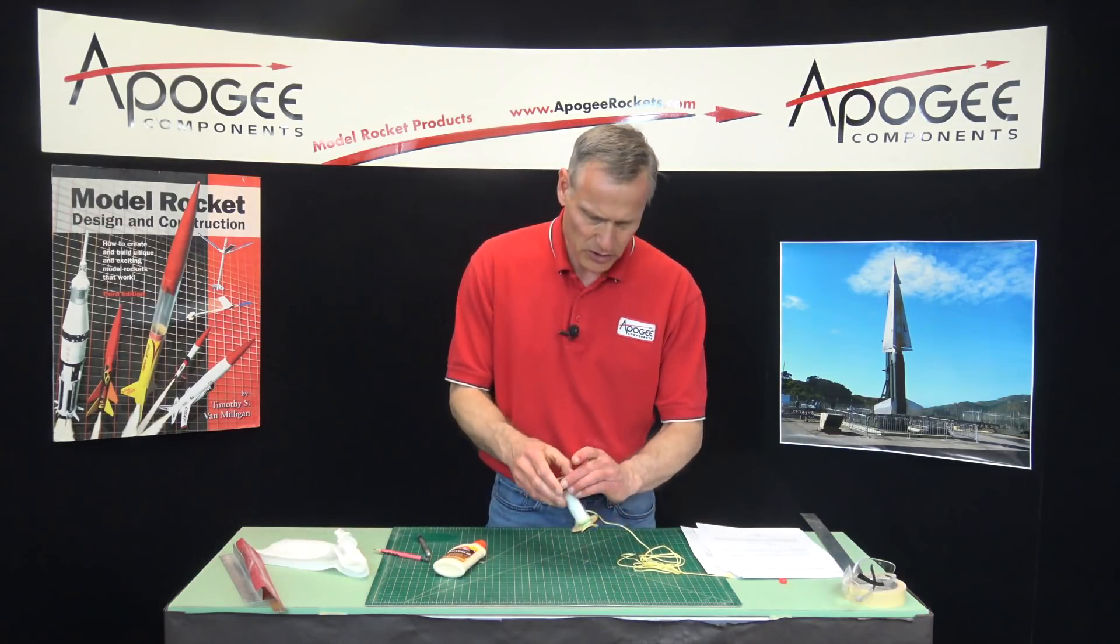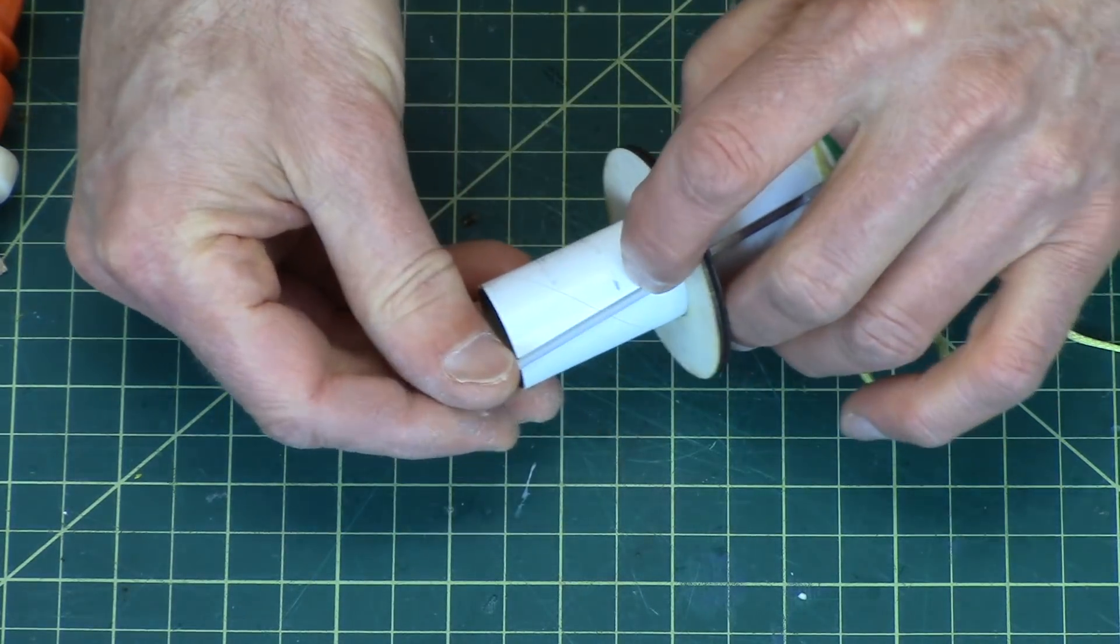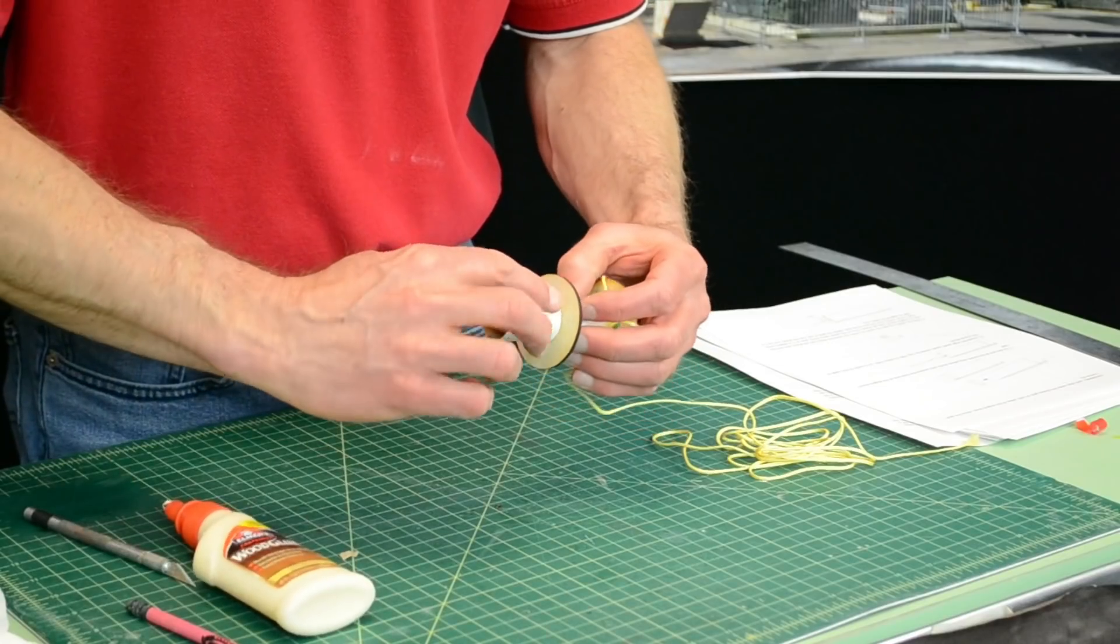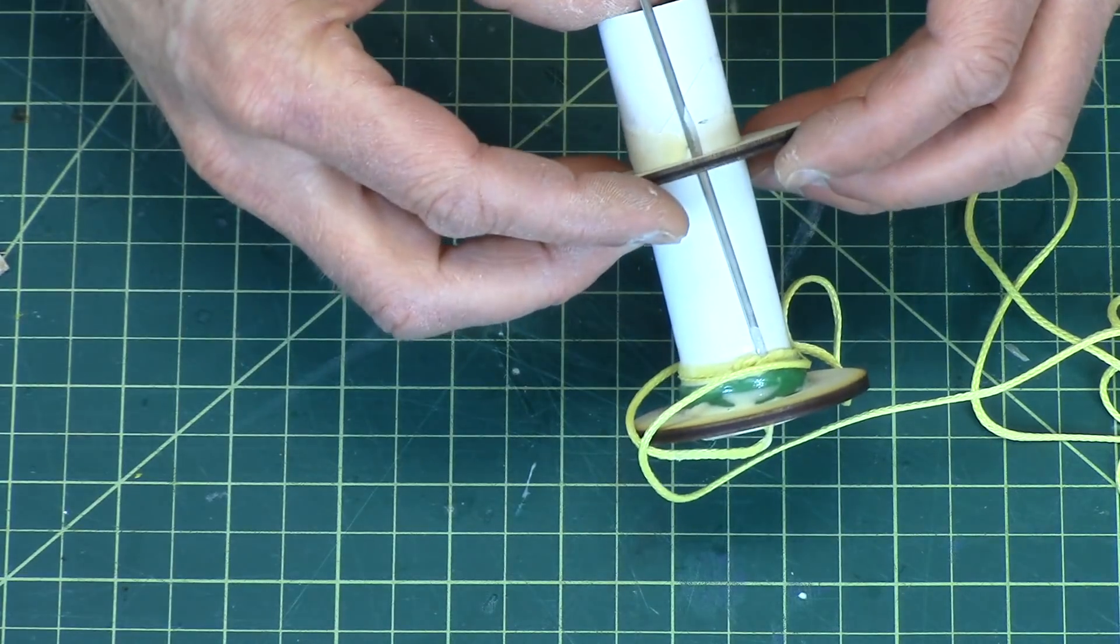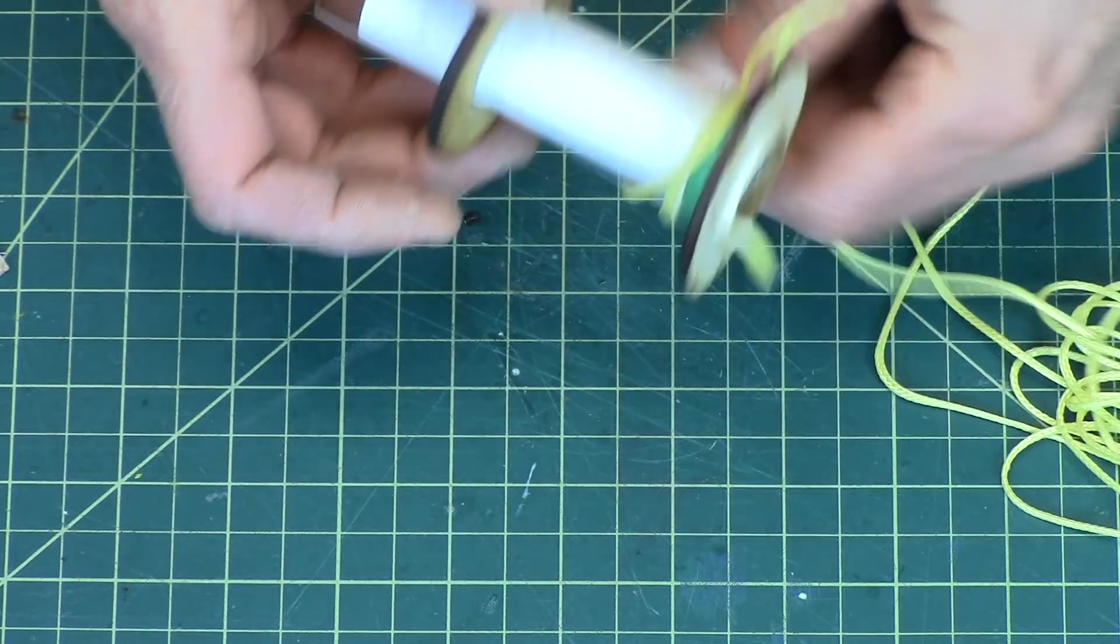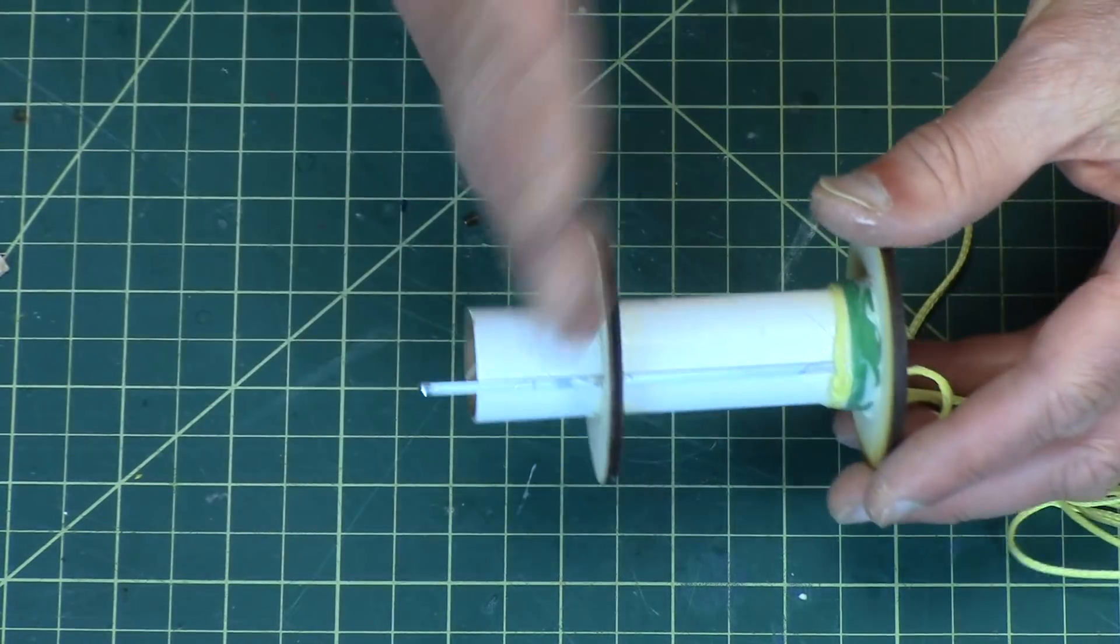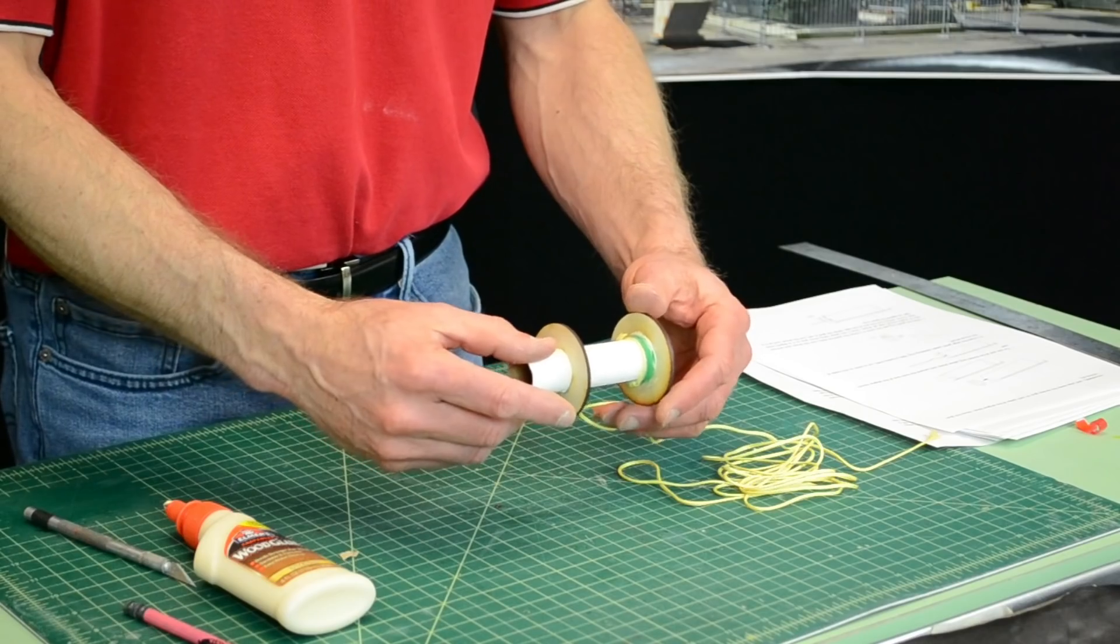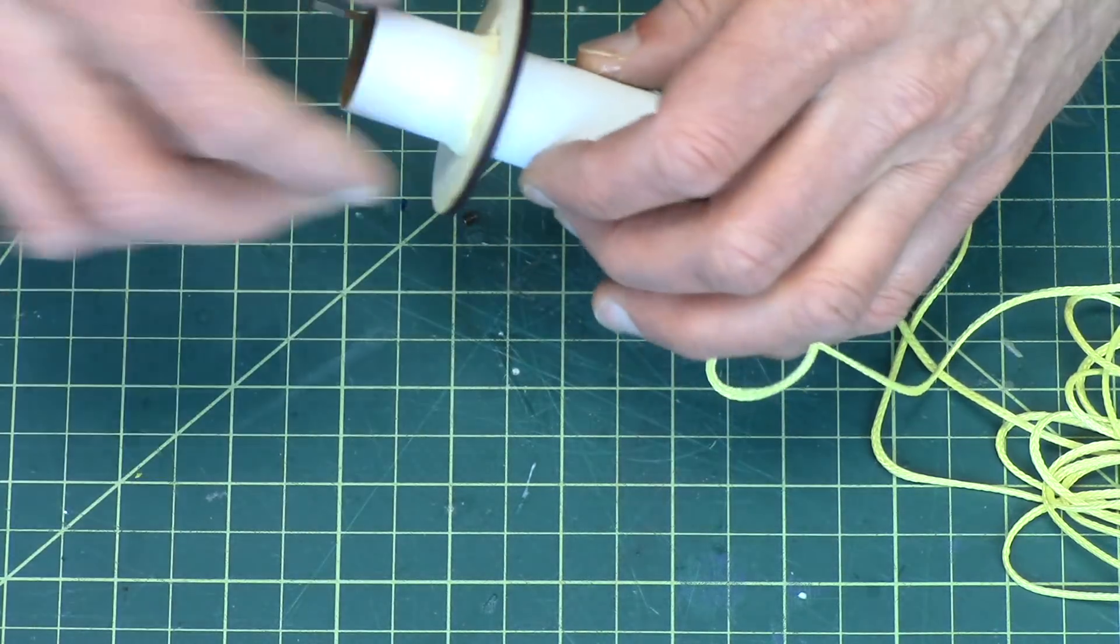And then finally we're going to glue that ring right there. There was my first mark right there. Just put a bead of glue around the outside, smear it around, and just slide it in. Make sure that the engine hook is straight along the tube, so just kind of rotate it around until it's nice and straight. Make sure that it's also vertical, so kind of look at it, and then take a little bit of glue and then we'll put a fillet around the outside on both sides.